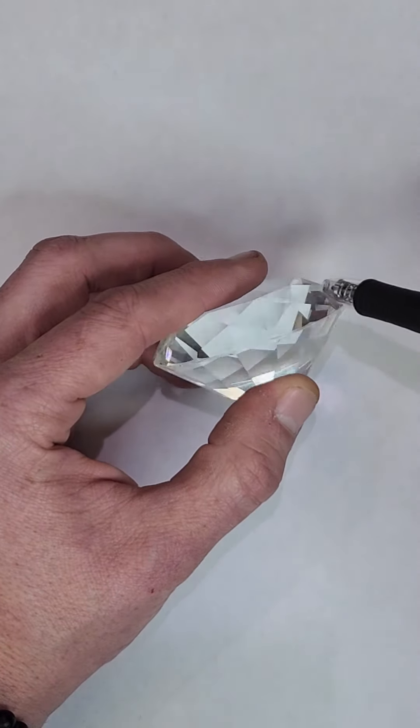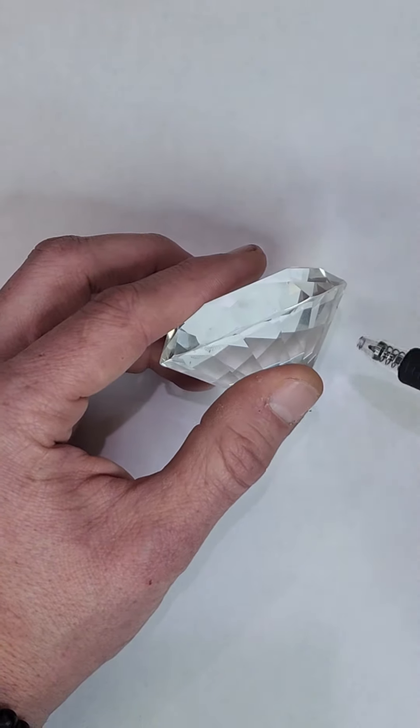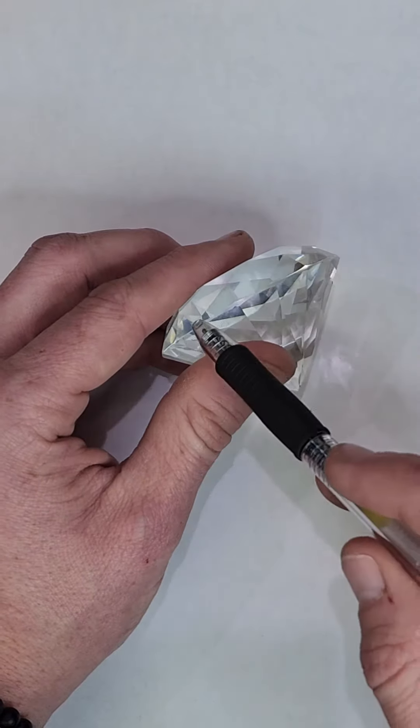You have your crown, this part right here, your pavilion, and the girdle.